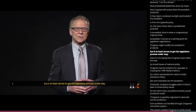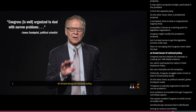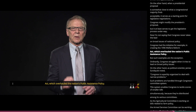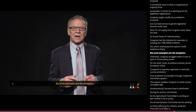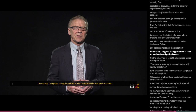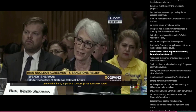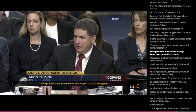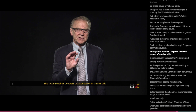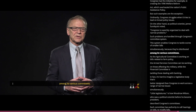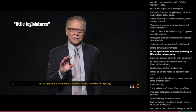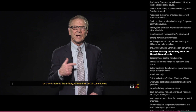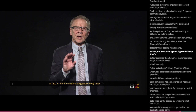On the other hand, as political scientist James Sundquist noted, Congress is superbly organized to deal with narrow problems. Such problems are handled through Congress's committee system, which enables Congress to tackle scores of smaller bills simultaneously because they're distributed among its various committees. As the Agricultural Committee is working on bills related to farm policy, the Armed Services Committee can be working on those affecting the military, while the Financial Committee is tackling those dealing with banking, and so on. It's hard to imagine a legislative body better designed than Congress to work across a range of narrow issues simultaneously. 'Little legislatures' is how Woodrow Wilson — a political scientist before he became president — described Congress's committees.